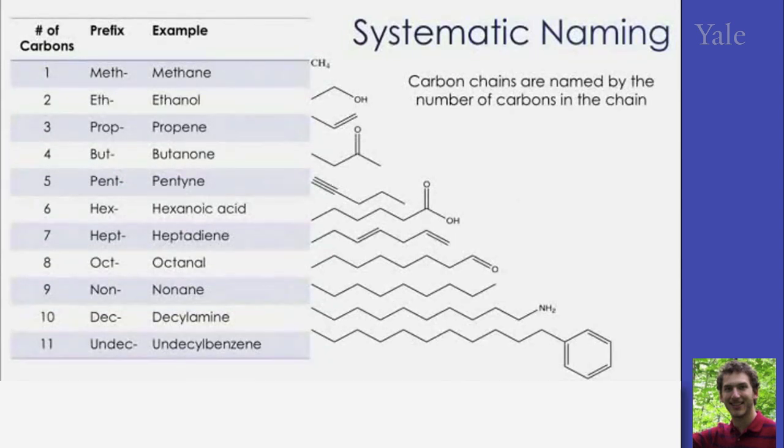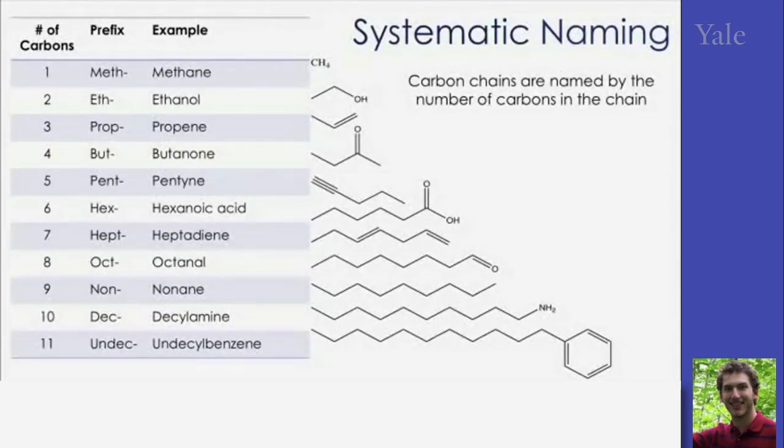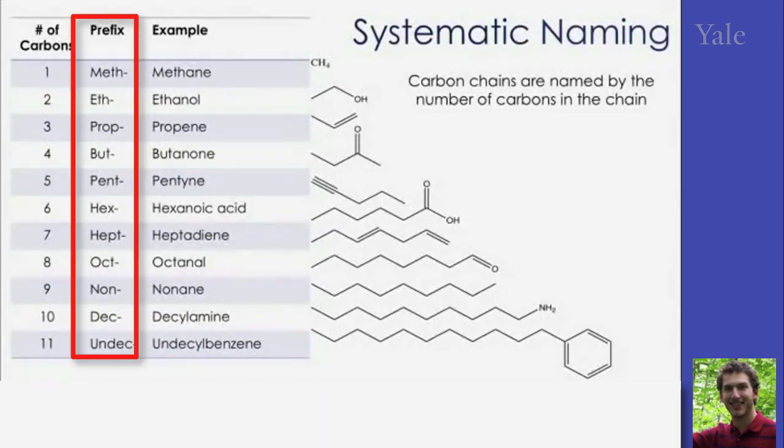One form they can come in is chains. Again, we use prefixes to indicate the number of atoms in this chain. You'll see here the first four, meth, eth, prop, and bute, make very little sense. And these are derived from archaic words.